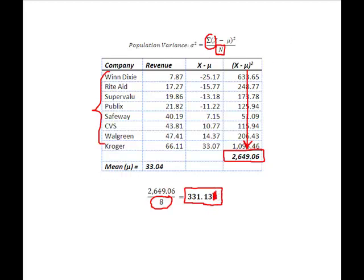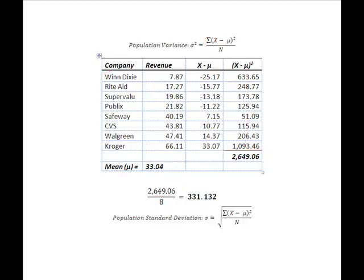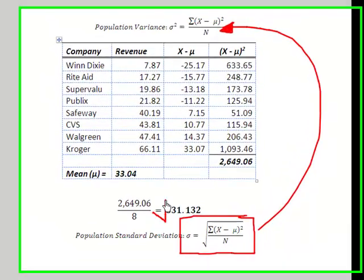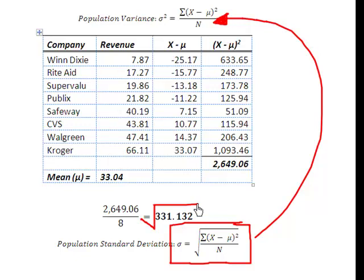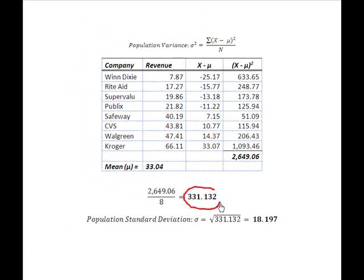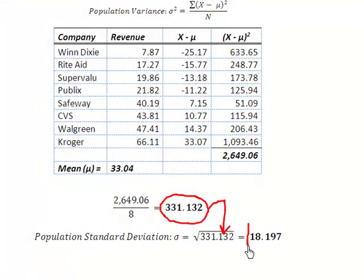How do we get to the standard deviation? That's the simplest thing you're going to do all day, because the population standard deviation is simply the square root of this variance formula. To calculate the standard deviation, once I have the variance, I take the square root of 331.132, which gives me a population standard deviation of 18.197, which I would round to 18.20.